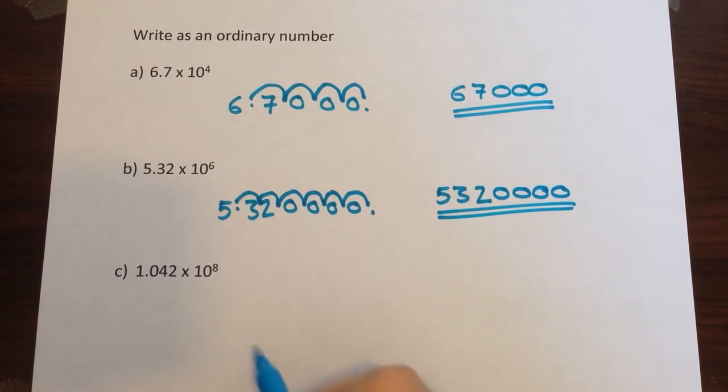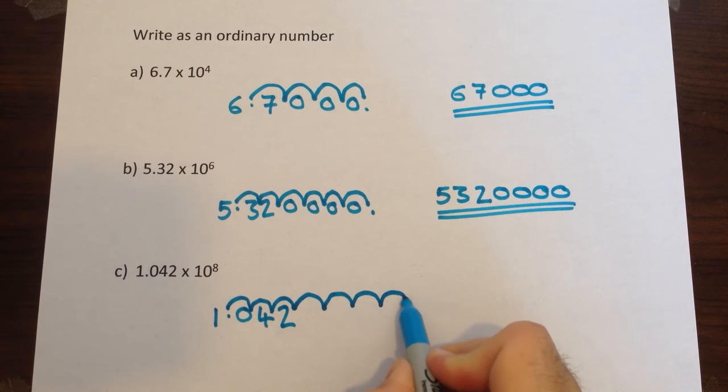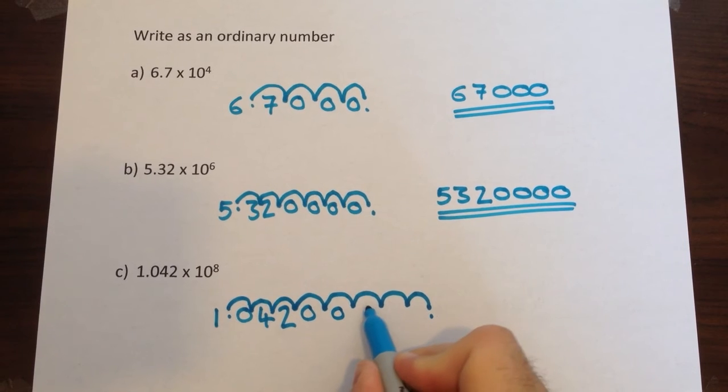Now last one. Again, same method. Start with the original number. This time we've got to move eight places. So 1, 2, 3, 4, 5, 6, 7, 8, decimal point's now there. Fill in the spaces with zeros.